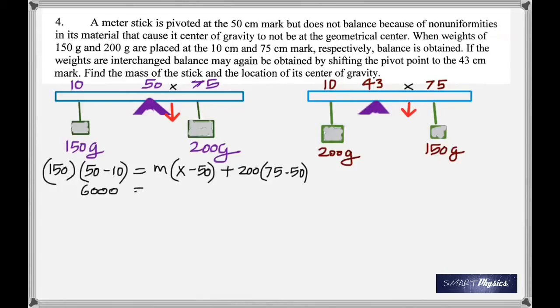So on the left side you have 6,000. The right side, we do not know the mass and we do not know x. So it stays that way plus 5,000. That's 200 times 25. Rearrange 6,000 minus 5,000. You have that on one side and you have m times x minus 50 on the other side. So that is equation one.